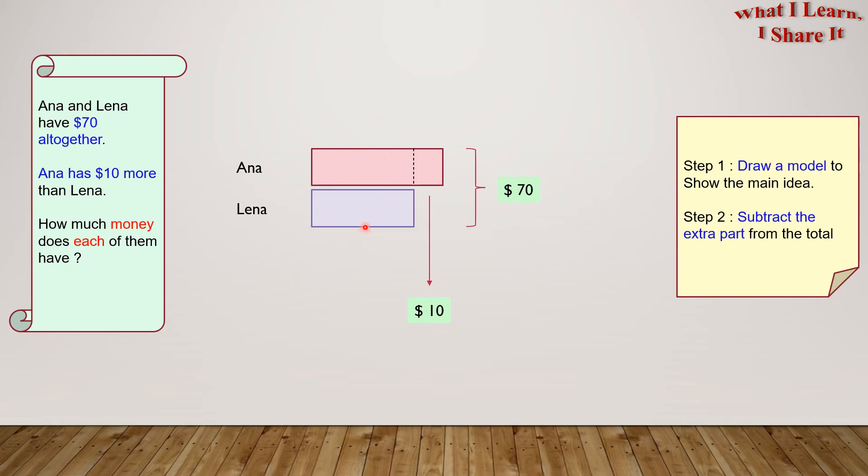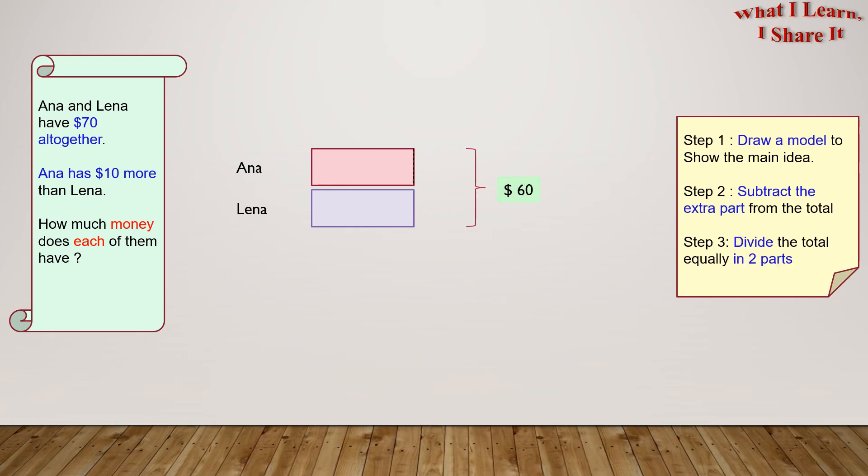But if we do that, then the total will also get reduced by $10. This means the new total will be $70 minus $10 equals $60. Here we have the new total, which is $60, and Anna and Lena will both have equal money amounts now.